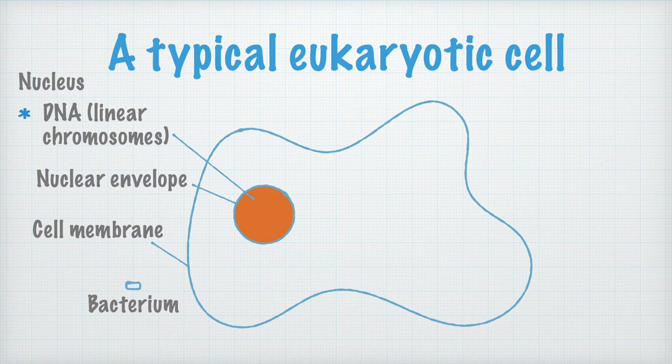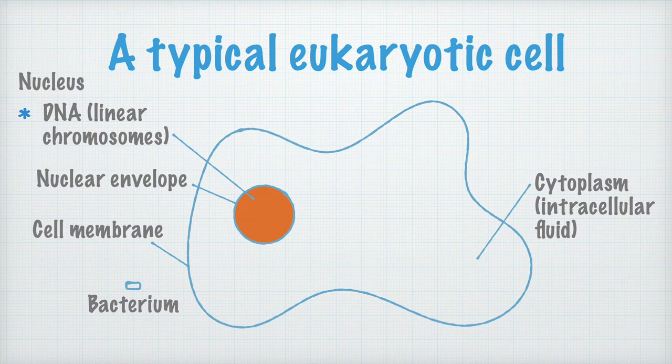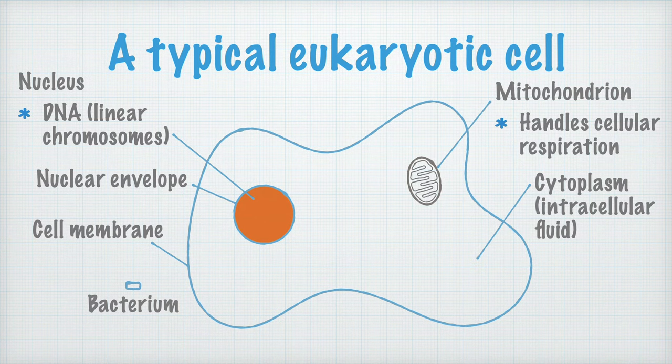Something that is also different from bacteria is that eukaryotic cells contain so-called organelles. These can be seen as small organs which perform specialized functions in the cell. One such organelle is the mitochondrion. Sometimes it's called the cell's power plant, because in it the cellular respiration takes place — that is, the combustion of glucose from which the cell gets its energy. From the nuclear envelope, a large membrane system called the endoplasmic reticulum is extended.